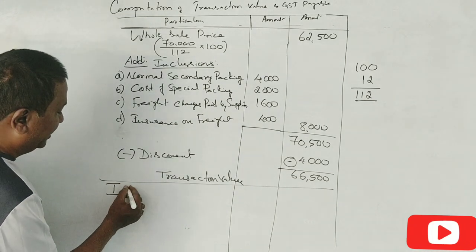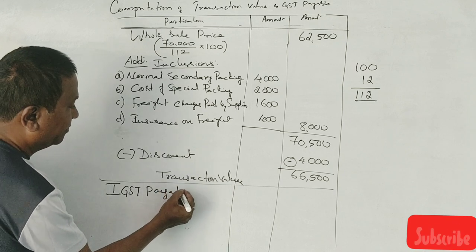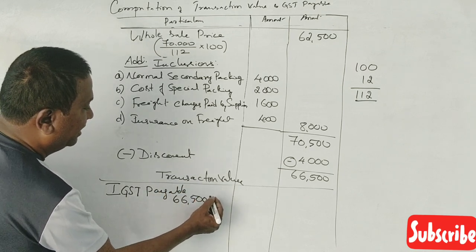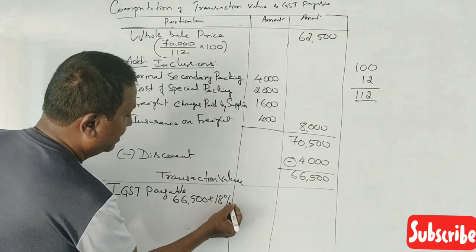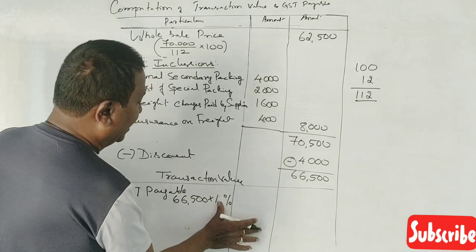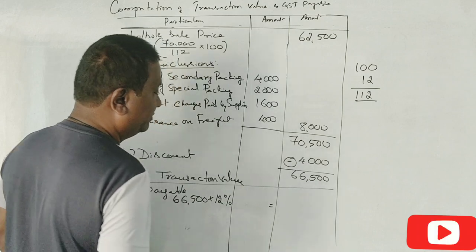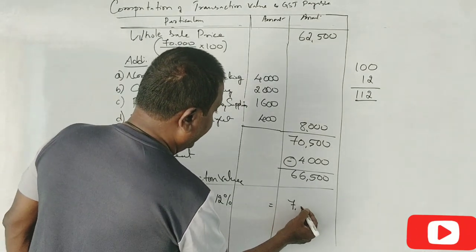Interstate transaction. Now calculate IGST. IGST payable. Now it's 66,500 into what percent? 12 percent. 12 percent, yes. That gives us 7,980.